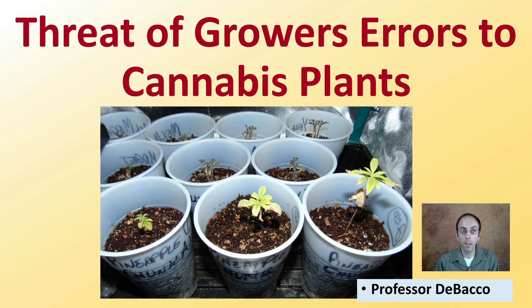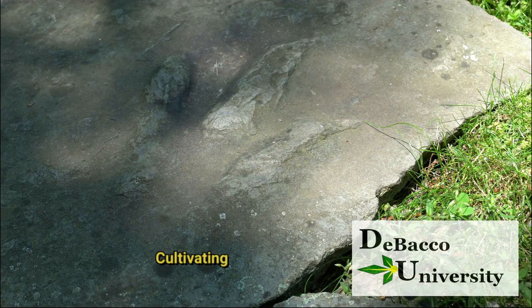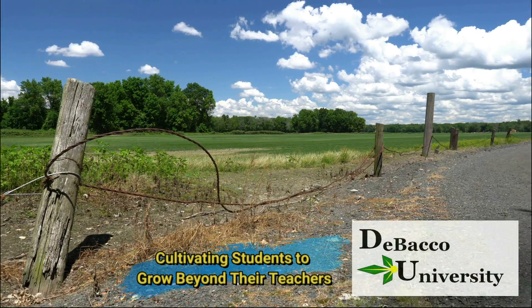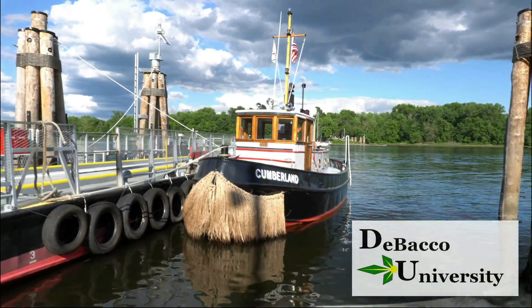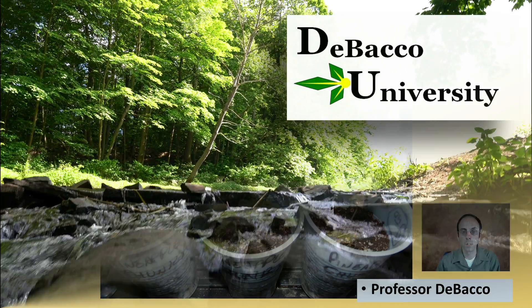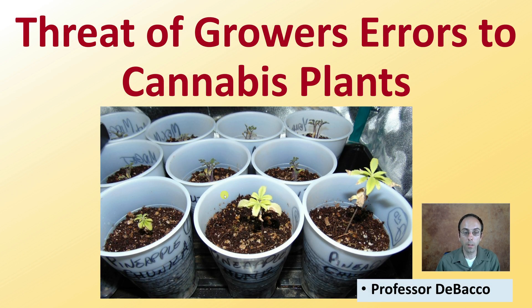On this DeBacco University video, we're going to look at the threat of some grower errors to cannabis plants. Since we've all made mistakes when growing, here are some helpful tips to help you avoid common grower errors. As we can see here, these plants definitely look a little stressed — could be excessive nutrients, could be improper pH — so hopefully you don't make some of these same errors.